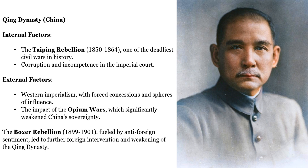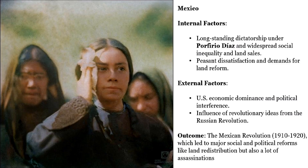External factors: Western imperialism with forced concessions and spheres of influence. The impact of the Opium Wars, which significantly weakened China's sovereignty. The Boxer Rebellion, fueled by anti-foreign sentiment, led to further foreign intervention and weakening of the Qing Dynasty.